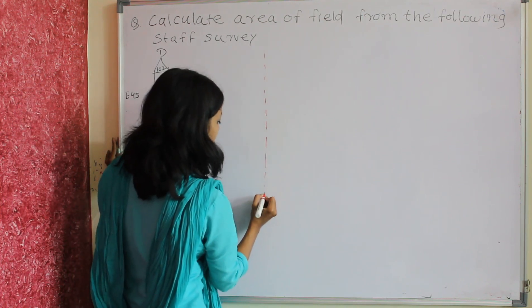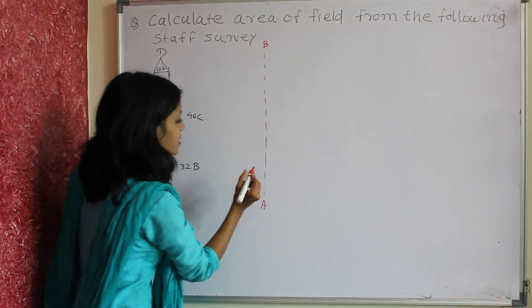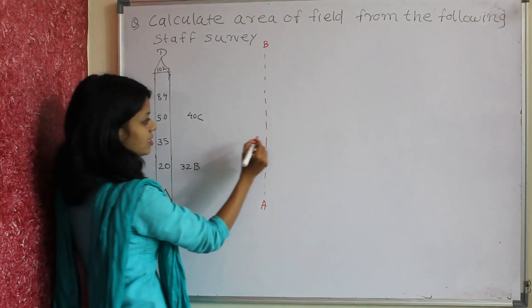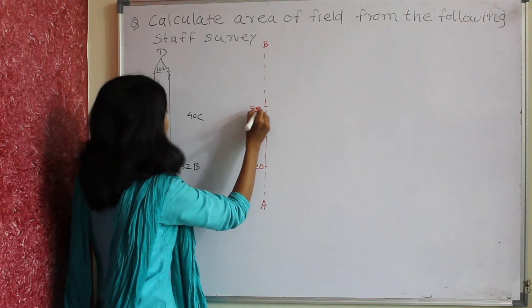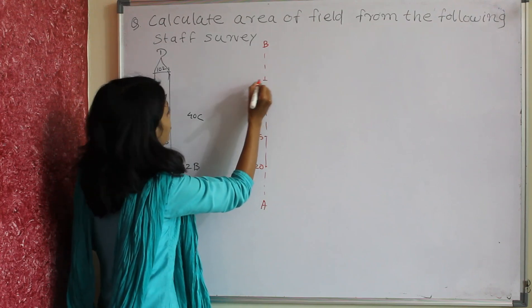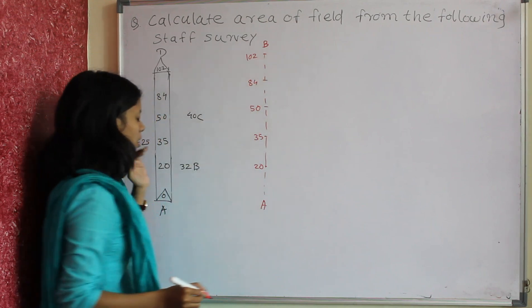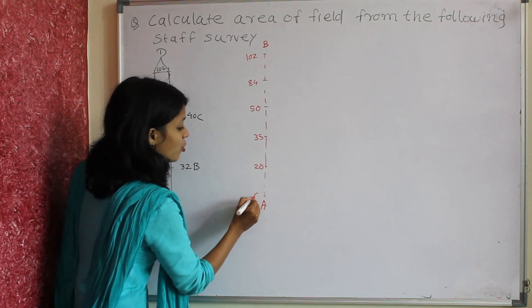Drawing the chainage line from A to B with distances 20, 35, 50, 84, and 102 meters, starting from 0.